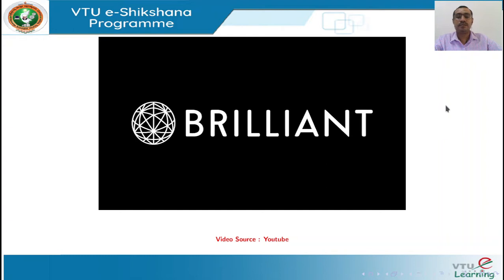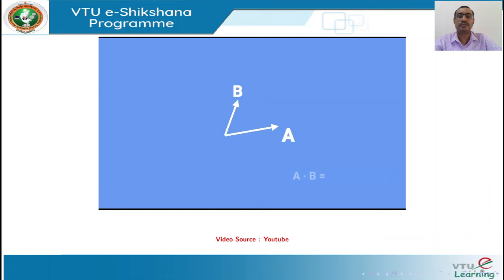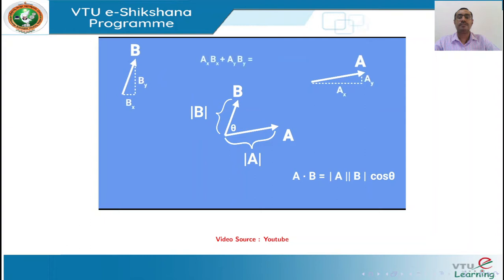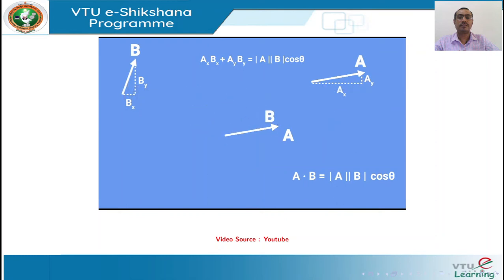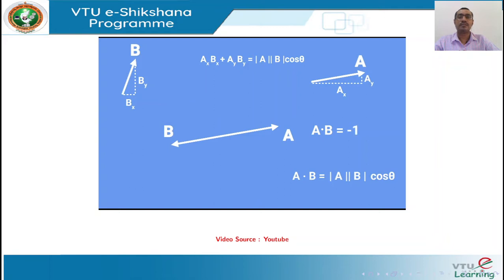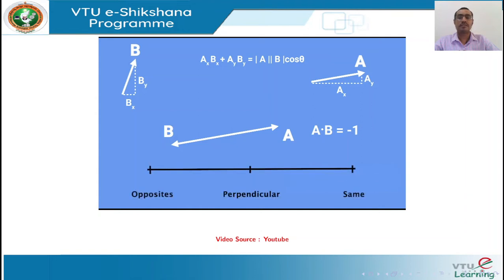The dot product of two vectors can be found by multiplying their magnitudes and then multiplying by the cosine of the angle between them. In component form, you multiply the x-components and y-components and add the results. One way to think about this value is as a measure of how similar the two vectors are — most accurate when each vector has a length of one. For unit vectors: dot product = 1 when the angle is zero, 0 when 90 degrees, and −1 when vectors point in opposite directions. So the dot product is a measure of similarity on a scale of −1 to 1.